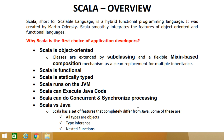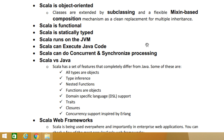What is the difference between Scala and Java? Scala has features completely different from Java, including: all types are objects, type inference, nested functions, functions as objects, domain-specific language (DSL) support, threads, closures, and concurrency support inspired by Erlang. A separate video will discuss these aspects in detail.